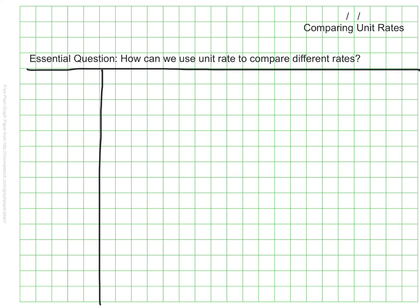Sometimes we want to know who is faster or which item is cheaper. Unfortunately, sometimes the information we are given is hard to compare. Let's look at a few examples.